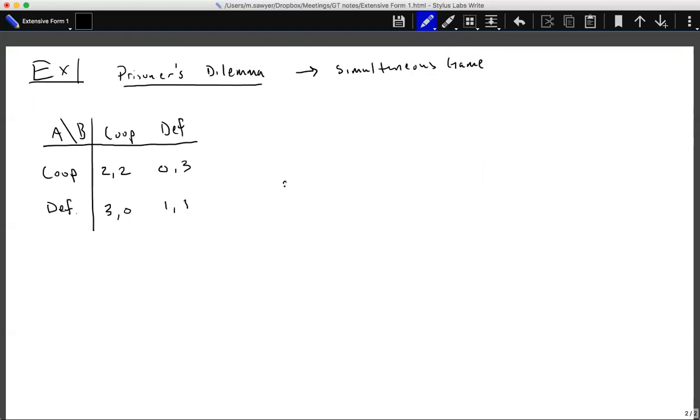So player A, if we were to set this up as a sequential game, player A and player B, as we're building our game tree, looks something like this. Where player A has two options and player B has two options. So player A can choose to cooperate or can choose to defect, and player B can choose to cooperate or can choose to defect.